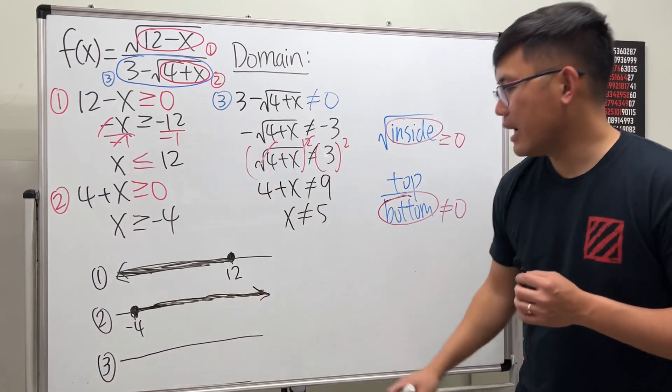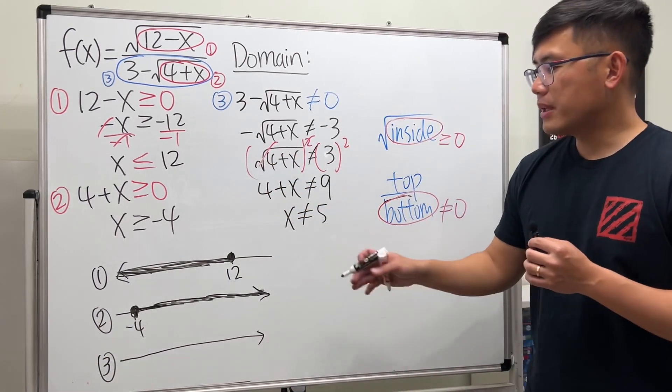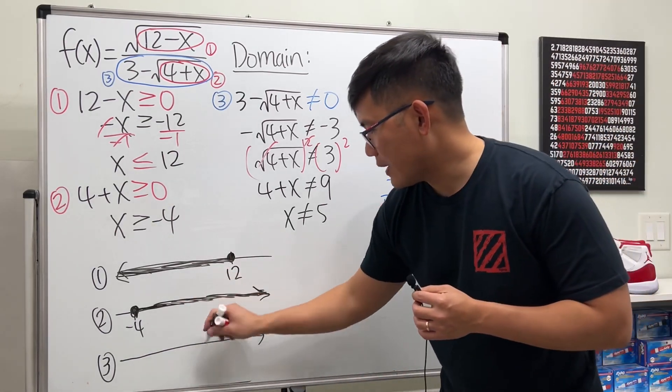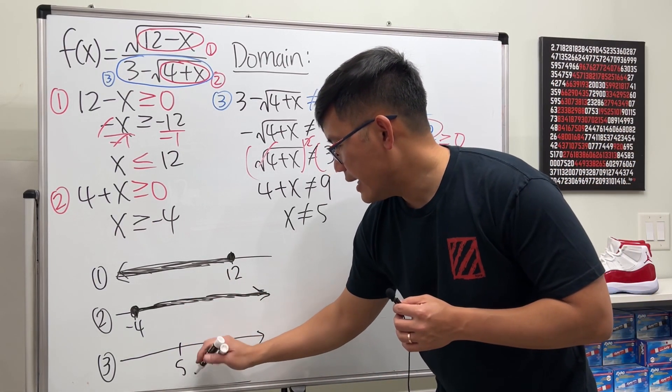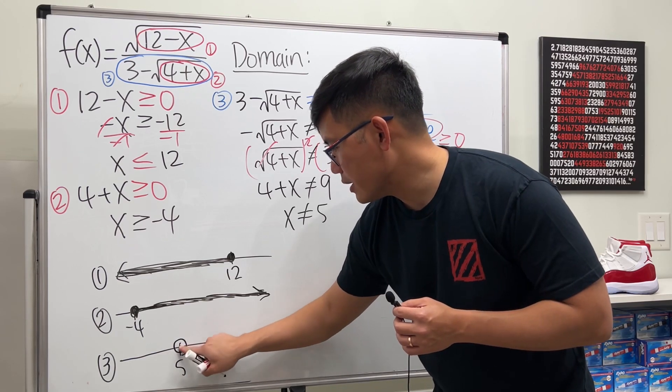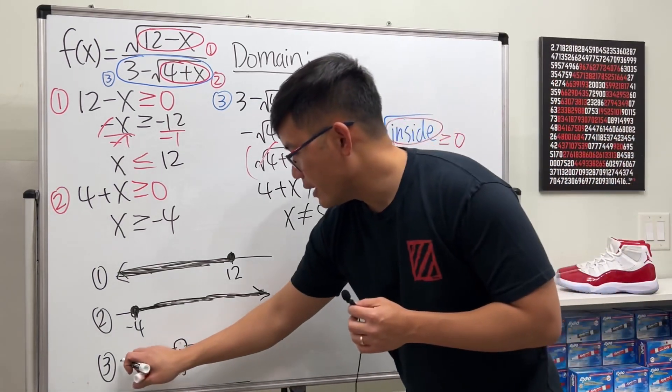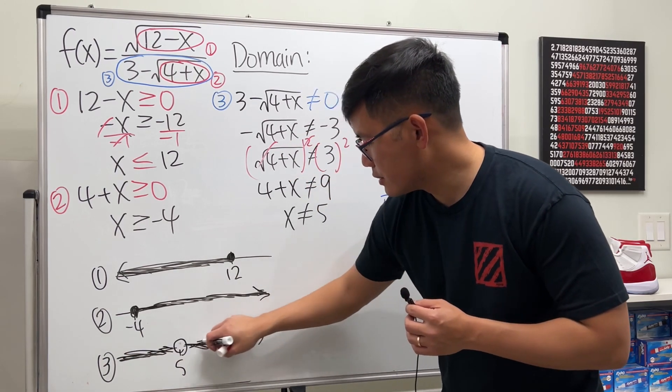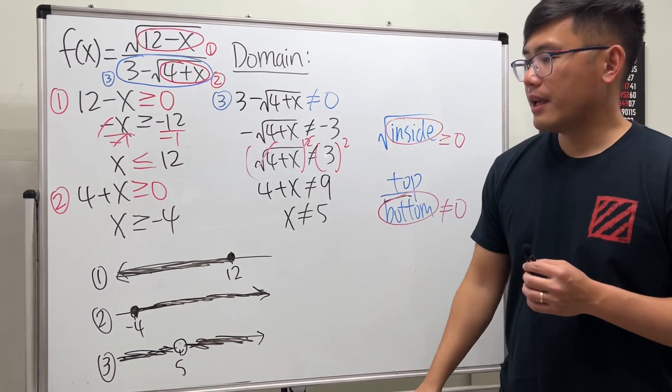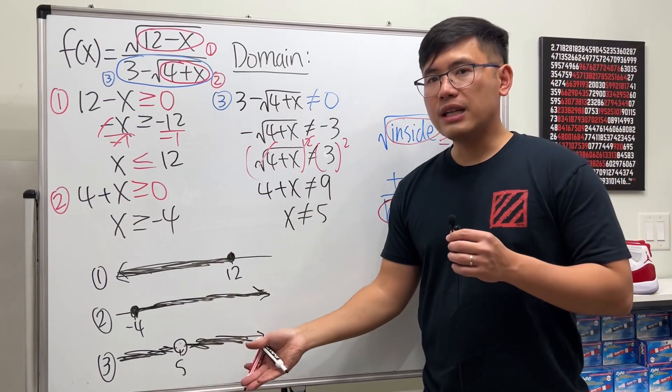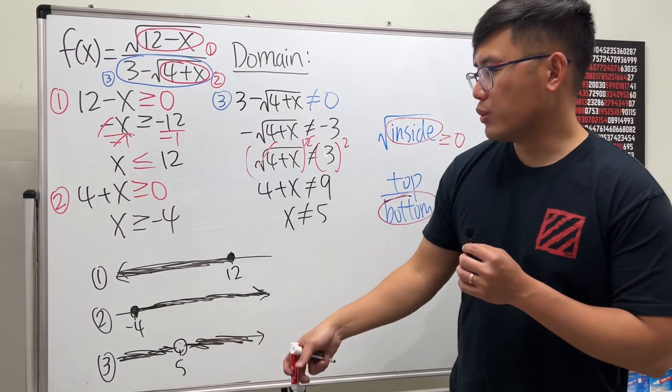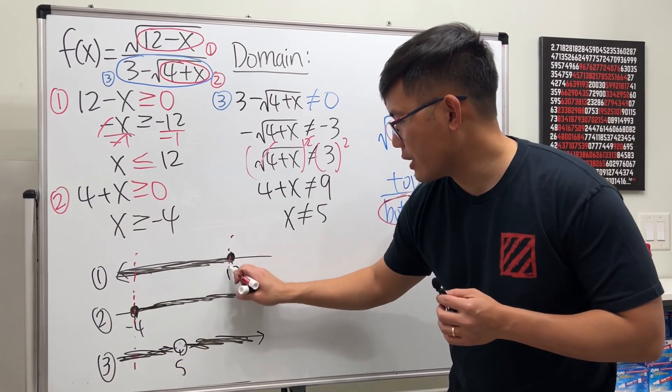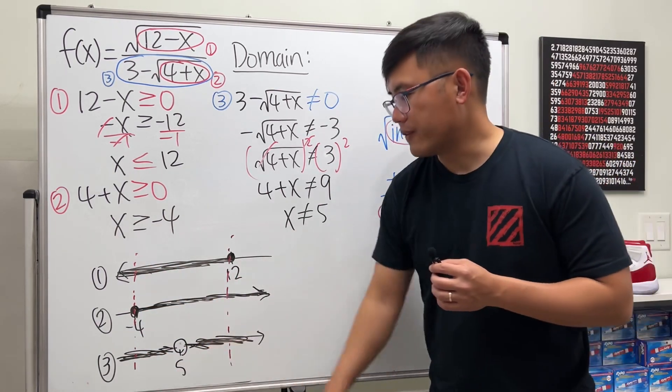All right, lastly, number three. Here we have a number line. In fact, the number can be anything except for five. So let's say, line out of five, let's say somewhere right here, and it will just be an open circle because x cannot be equal to five, but anything else is okay. And the way you do is you're just shading everything else. Now, in order for us to satisfy all these three conditions, we just look for the overlaps, which you can see that right here and also right here. Do not include the five though.